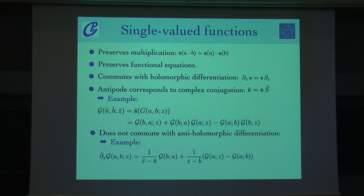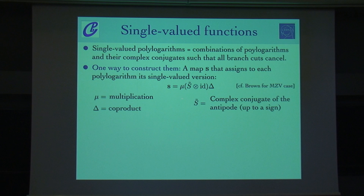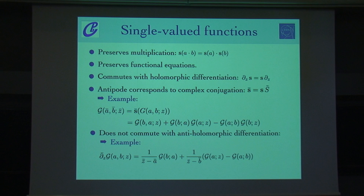This map S has very nice properties: it preserves multiplication, preserves functional equations, and commutes with all holomorphic differentiations, meaning these functions satisfy the same differential equations as their non-single-valued analogs. There is an actual action of complex conjugation on these functions. The anti-holomorphic derivative of such an object is more complicated than you might expect from ordinary polylogarithms. Just to summarize: we know how to construct these single-valued functions and what their properties are.